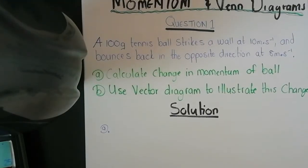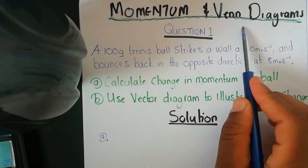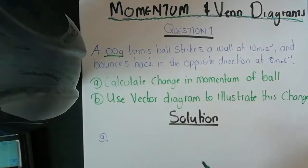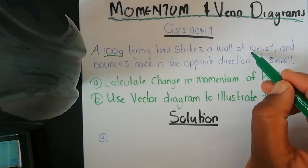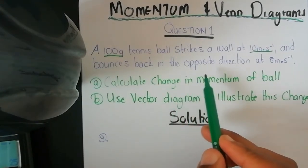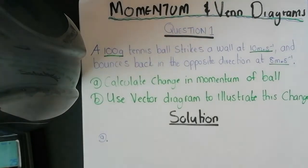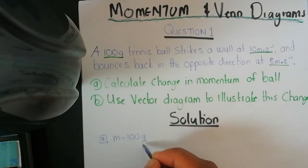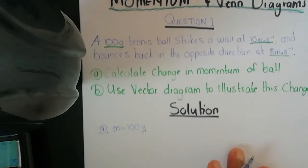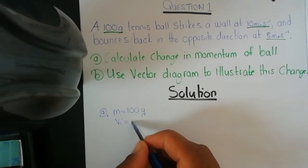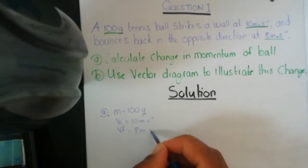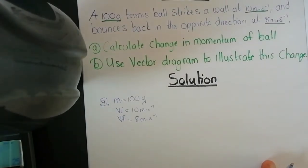Right now I'm going to be covering momentum and vector diagrams. Question one: a 100-gram tennis ball strikes a wall at 10 meters per second and bounces back in the opposite direction at 8 meters per second. Write down the givens: mass equals 100 grams, initial velocity equals 10 meters per second, and final velocity equals 8 meters per second.